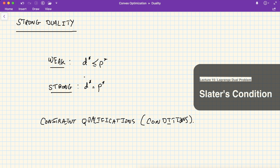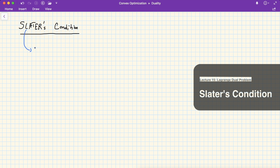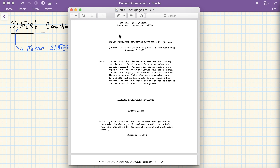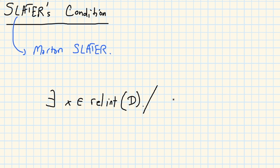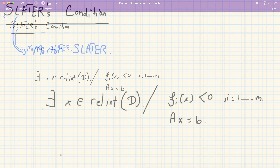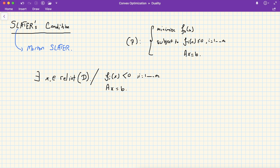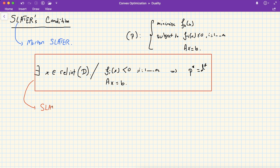One very popular constraint qualification is Slater's condition, from Morton Slater's paper. Slater gives a condition beyond convexity that tells you when strong duality holds. The condition states: there exists an x in the relative interior of the domain of the problem such that this point is strictly feasible — that is, f_i(x) < 0 for all i in 1 to m, and the affine constraints are satisfied. If such a point exists, strong duality holds. This is referred to as Slater's theorem.